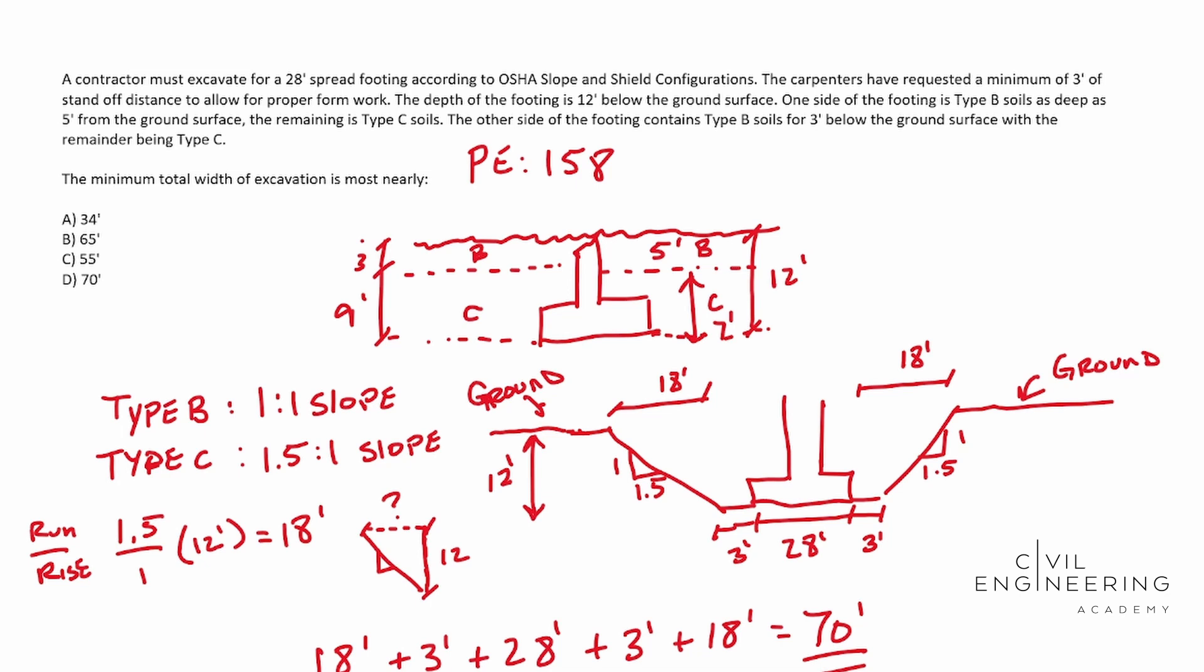But just remember any soil type over a lower soil type requires the cutback for the lower soil type. So that's a good trick that you need to remember. The trick to this problem was just knowing what kind of terminology we're dealing with. And so the answer is going to be D 70. So I hope this video helps and we'll catch you next time.